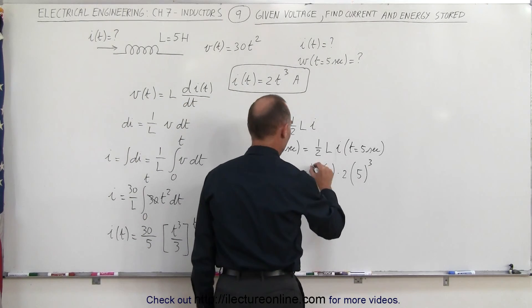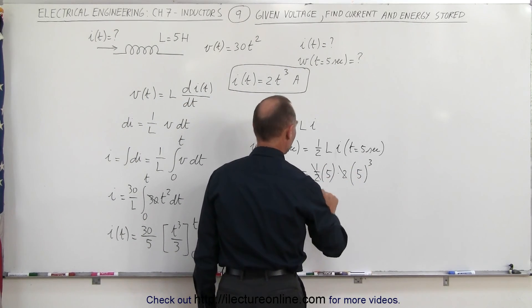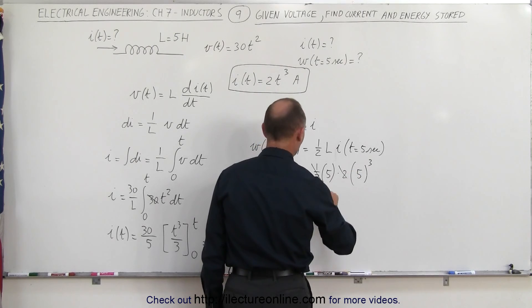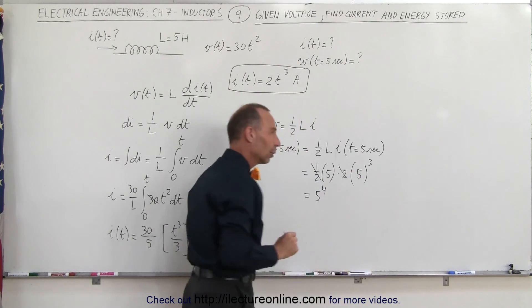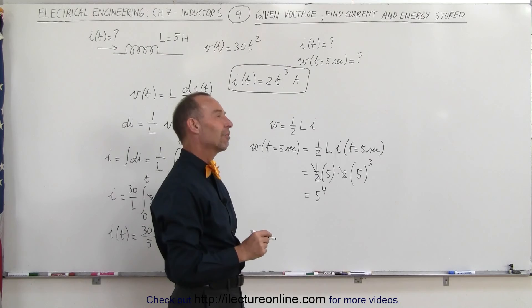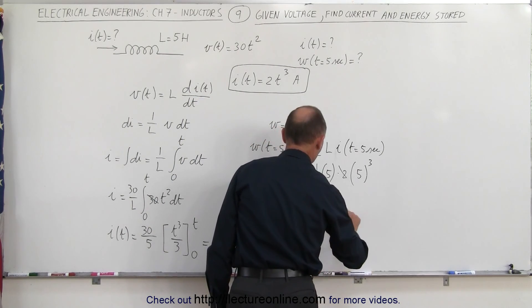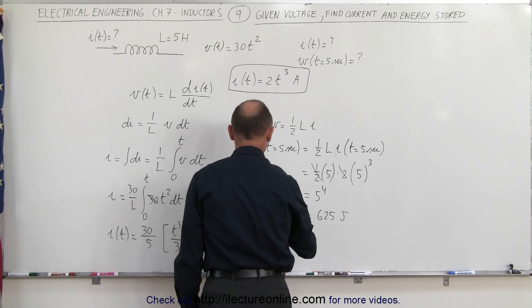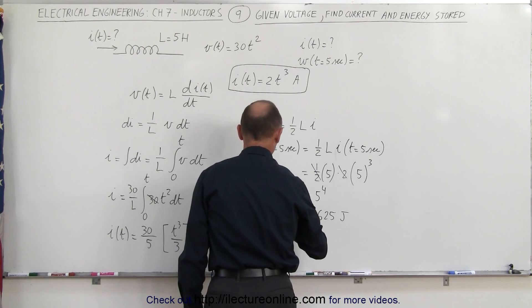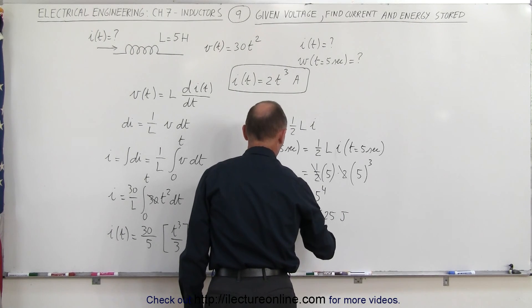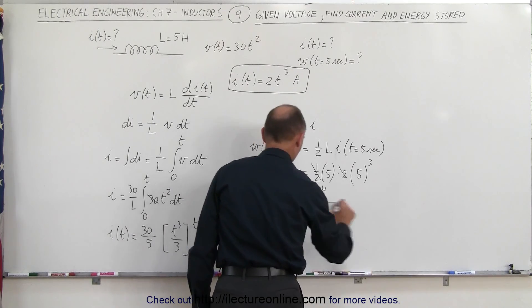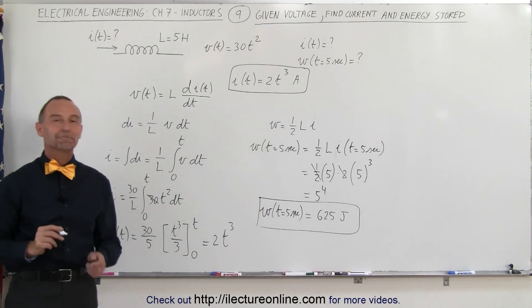One half and two cancel out so this is equal to five to the fourth power. Five to the fourth power which is 25 times 25 which is 625. So this is equal to 625 joules, would be the work when time equals five seconds. And that's how we do that.